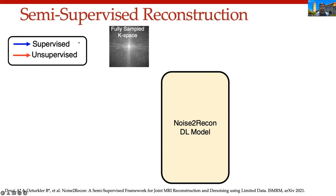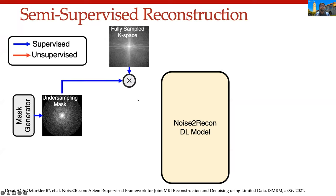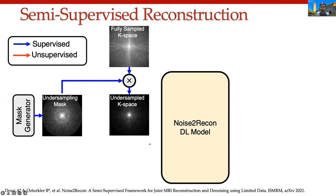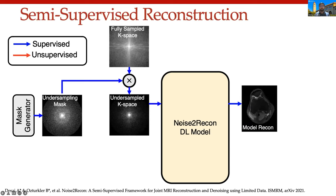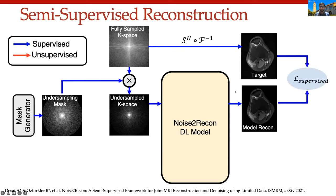The field is embracing several approaches to answer these challenges. The first revolves around semi-supervised learning. In the Noise2Recon model: we start with fully sampled k-space, generate an undersampling mask, simulate an undersampled k-space, pass it through the reconstruction model, and compare the output to the fully sampled target image. This minimization of the difference between target and model output is the standard supervised learning pipeline.